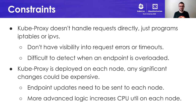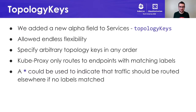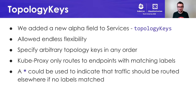So with that background, let's talk about our first attempt. We added a new alpha API field to services called topology keys. This allowed for endless flexibility — you could specify arbitrary topology keys in any order. And kube-proxy would then filter endpoints based on those topology keys, based on those labels. Any endpoints with matching values for those labels would be filtered in, and everything else would be excluded from what kube-proxy considered on a given node. A wildcard character could then be used to indicate that if matching labels couldn't be found, traffic should be routed elsewhere.